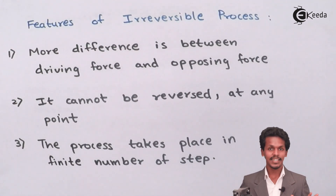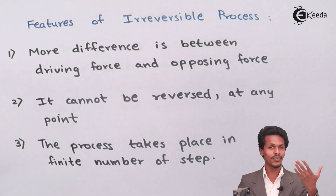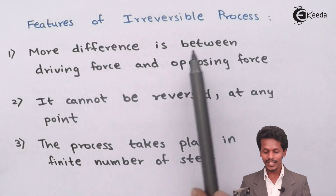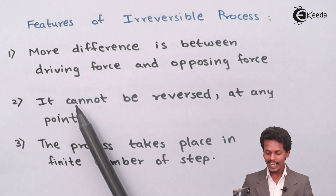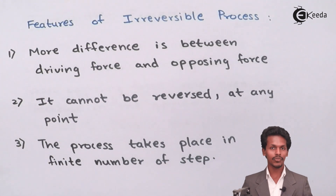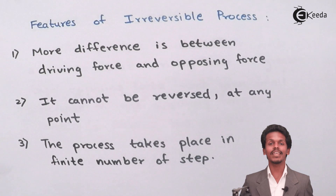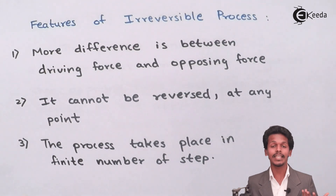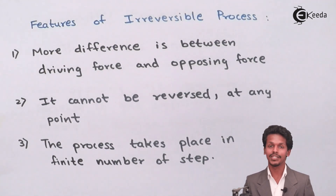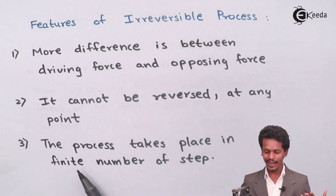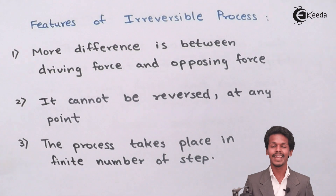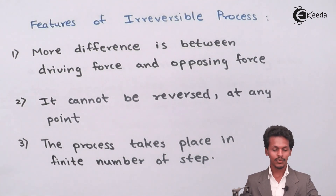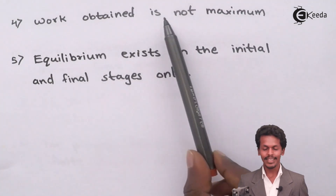The first feature of an irreversible process is a major difference between the driving force and opposing force. The second feature is that it cannot be reversed at any point — even increasing a slight amount of force on the opposing side cannot change the overall process. Third, the process takes place in a finite number of steps, and as a result, the work obtained is not maximum — work will be obtained, but not the maximum work as in a reversible process.